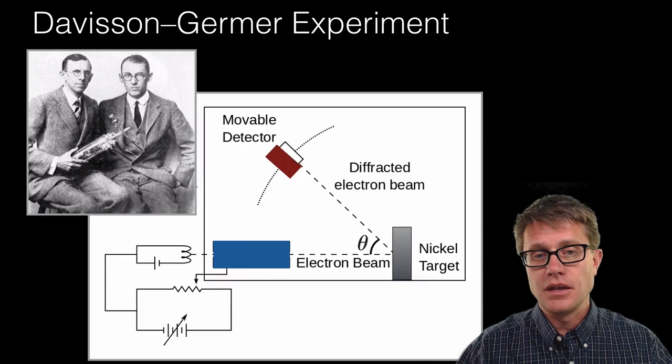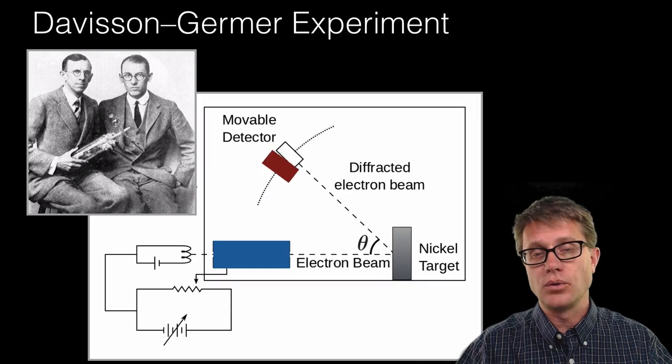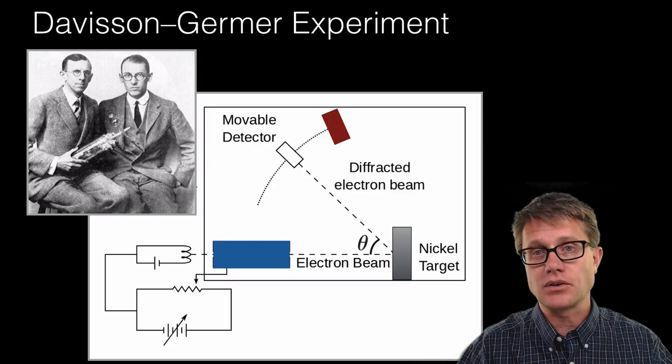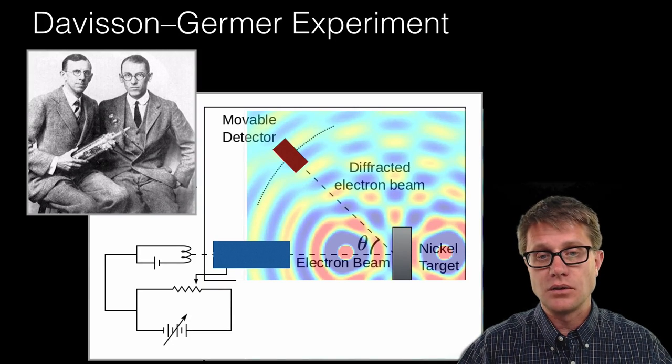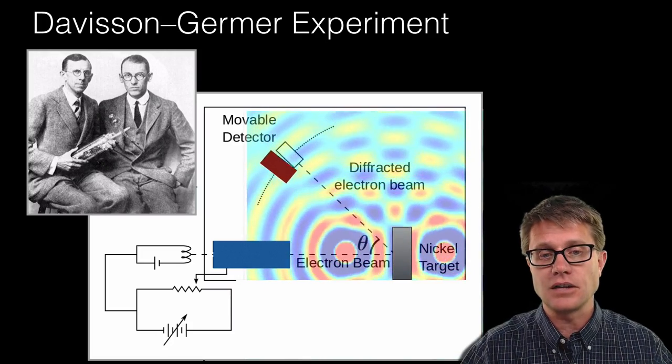They had a movable detector that as it moved back and forth at different angles, they hoped it would receive different amounts of an electron. So there would be interference of those electron matter waves.